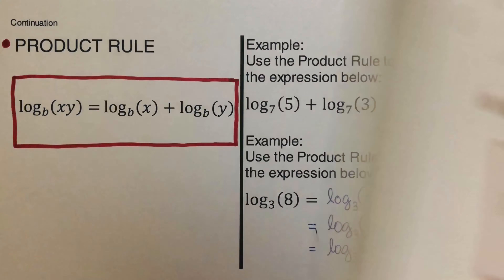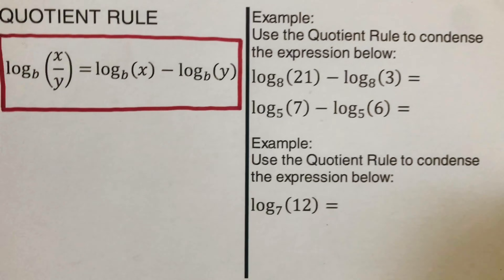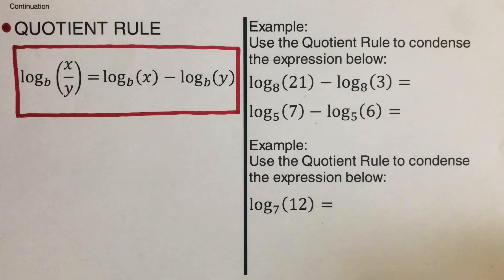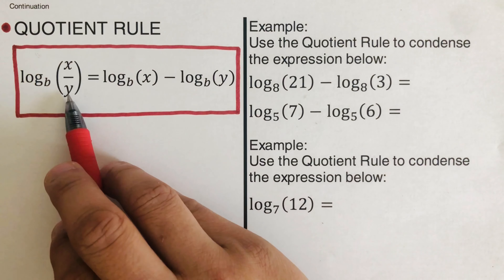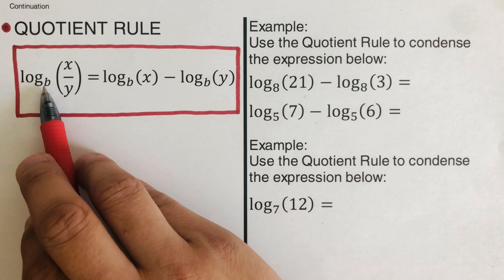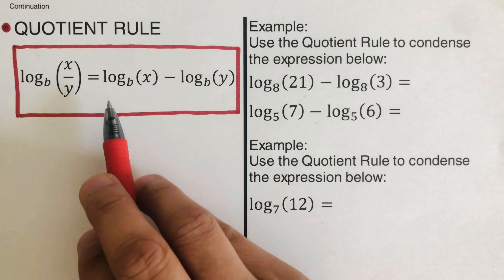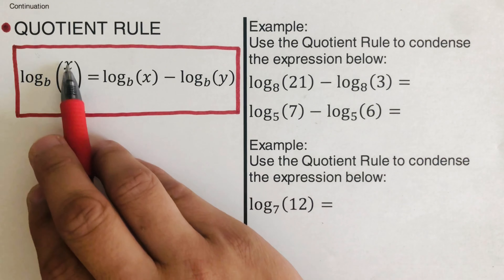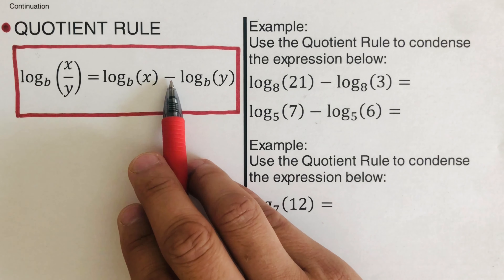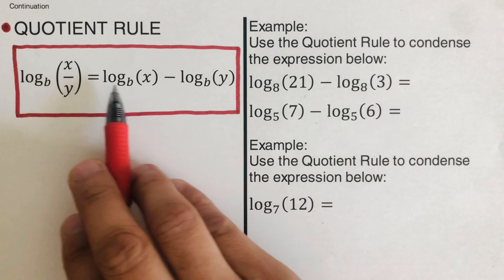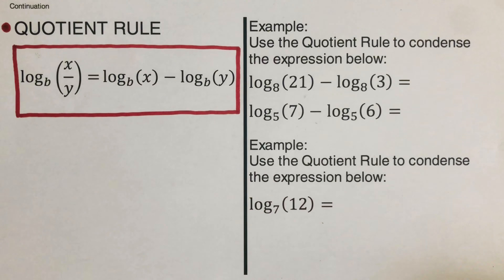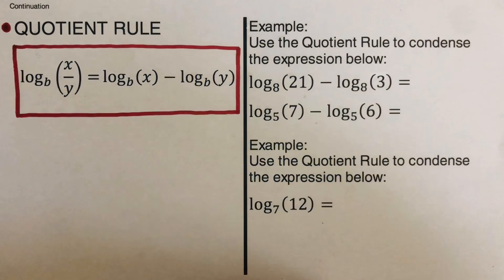Now let's move on to the quotient rule. The quotient rule tells us that log of x over y to the base b, when expanded, becomes log of x to the base b minus log of y to the base b. Since that's division, instead of adding we subtract the two log expressions.